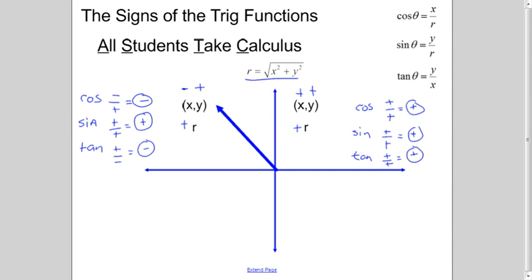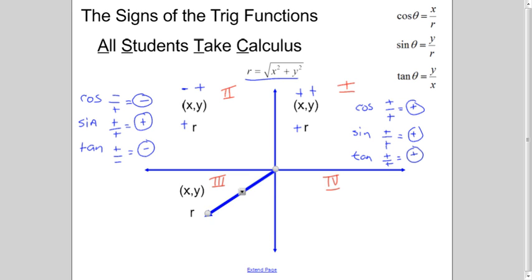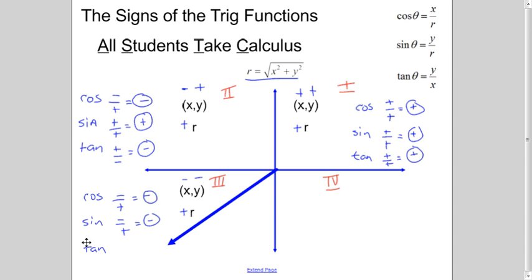Now let's look at quadrant three. For any angle between 180 and 270 degrees, not including 180 and 270, the terminal side falls in the third quadrant. Here x is negative, y is negative, but r is always positive. So cosine — x over r — is negative over positive, which is negative. Sine — y over r — is negative over positive, which is negative. And tangent — y over x — is negative over negative, which is in fact positive.